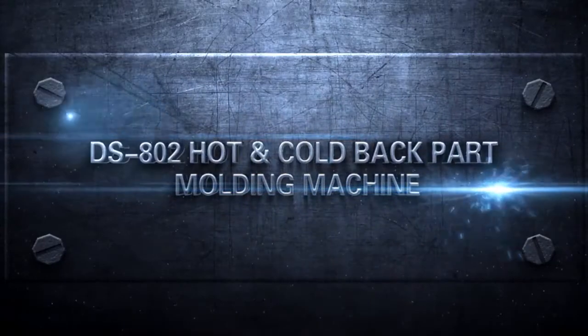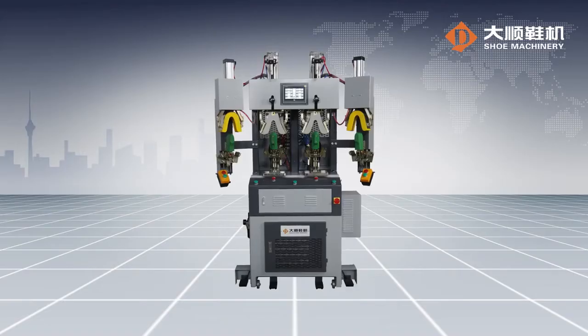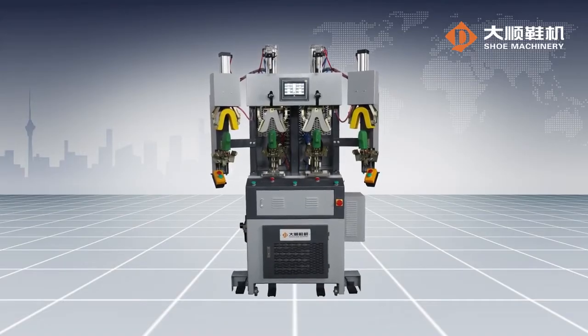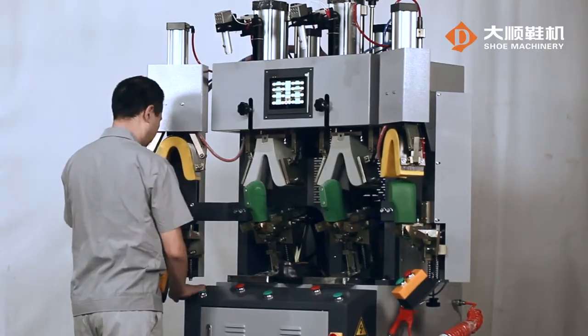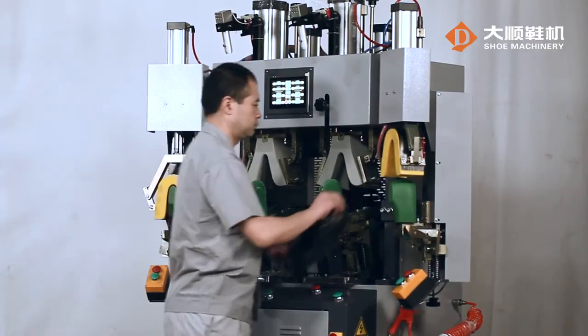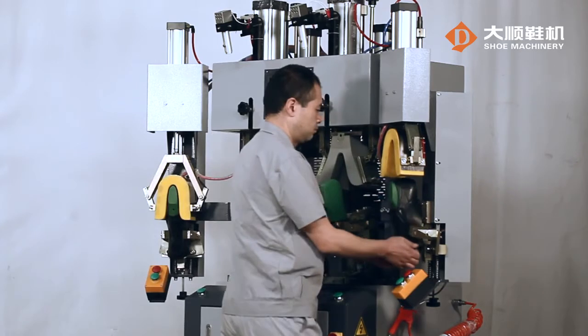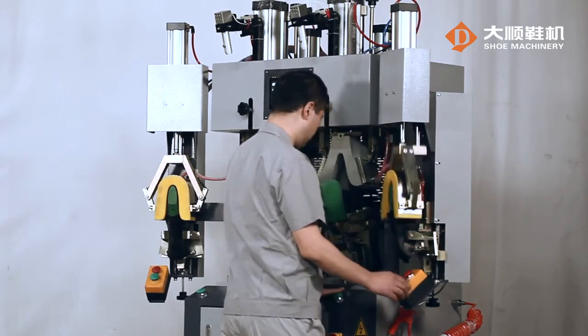ES802 Hot and Cold Back Part Modeling Machine. This machine is suitable for shaping and modeling of the counter with hot melt insert of men and lady shoes for lasting purpose.